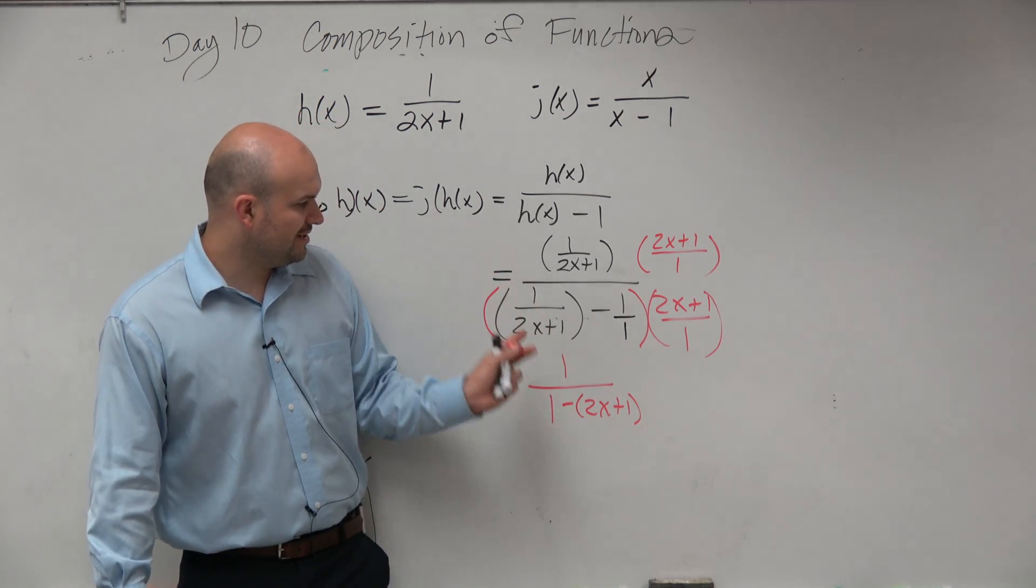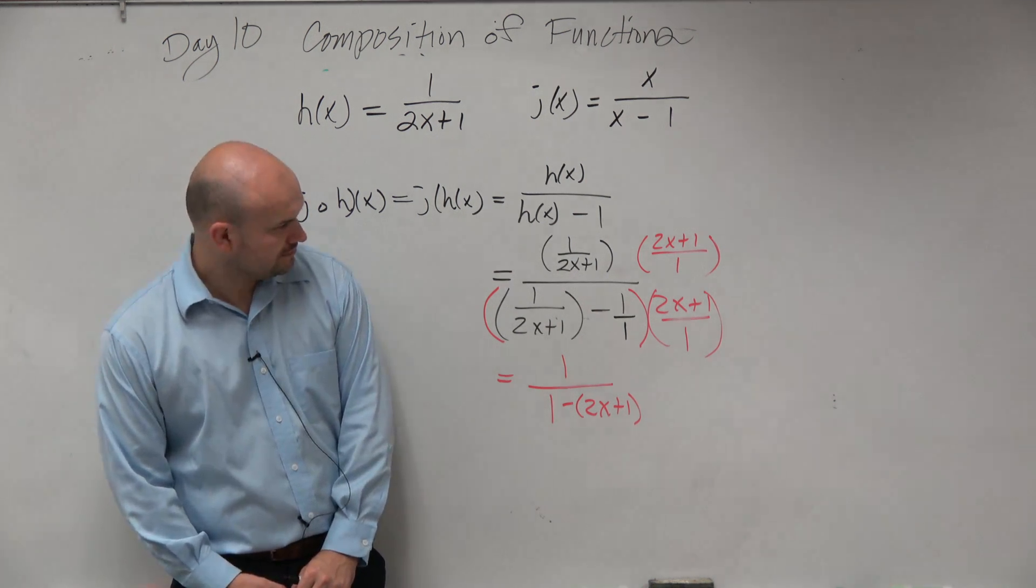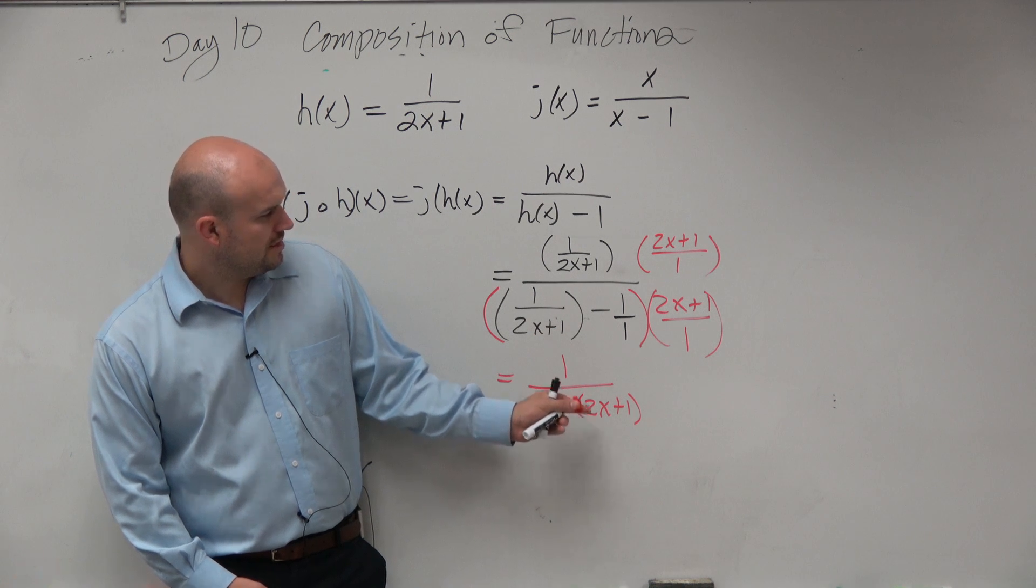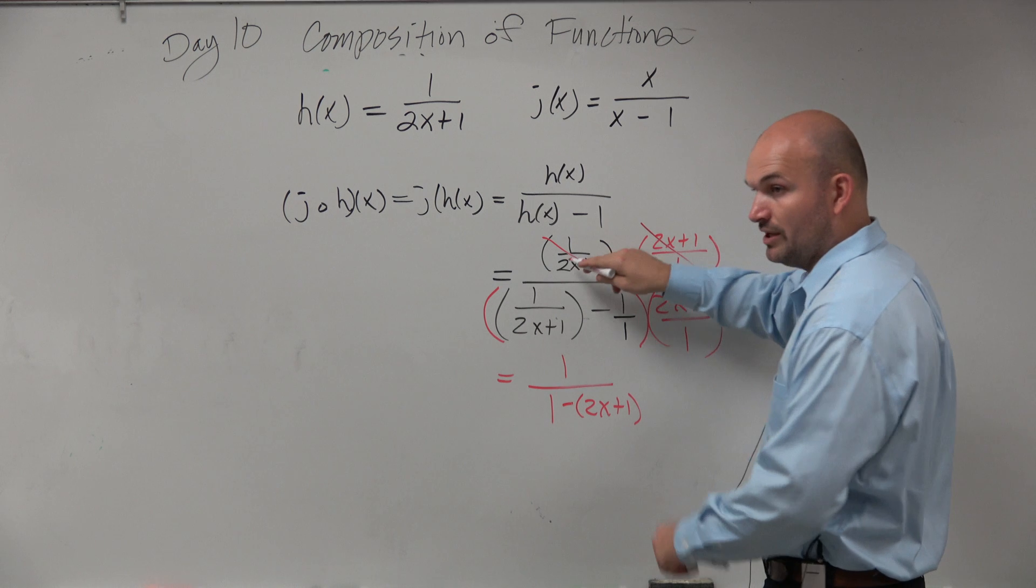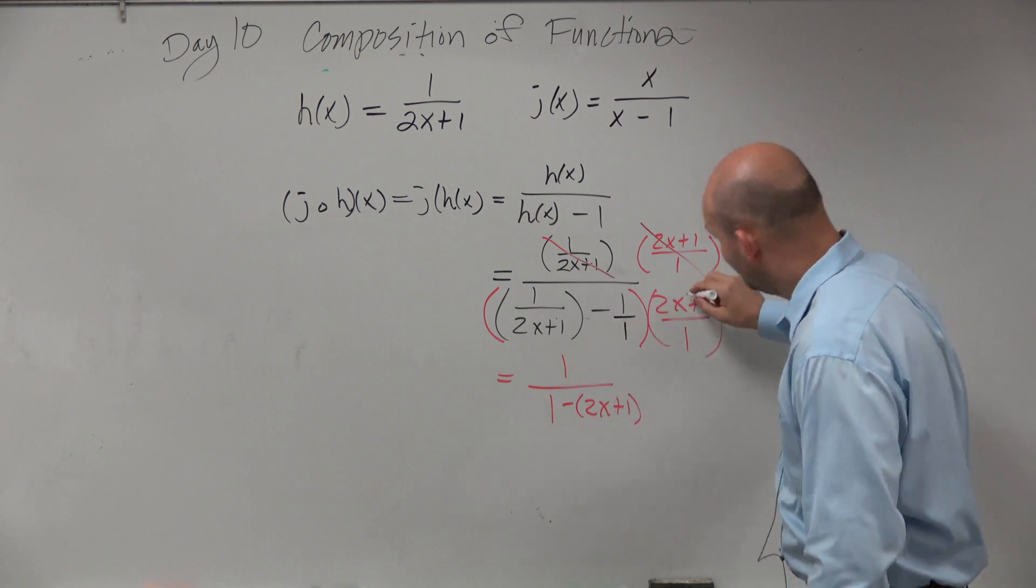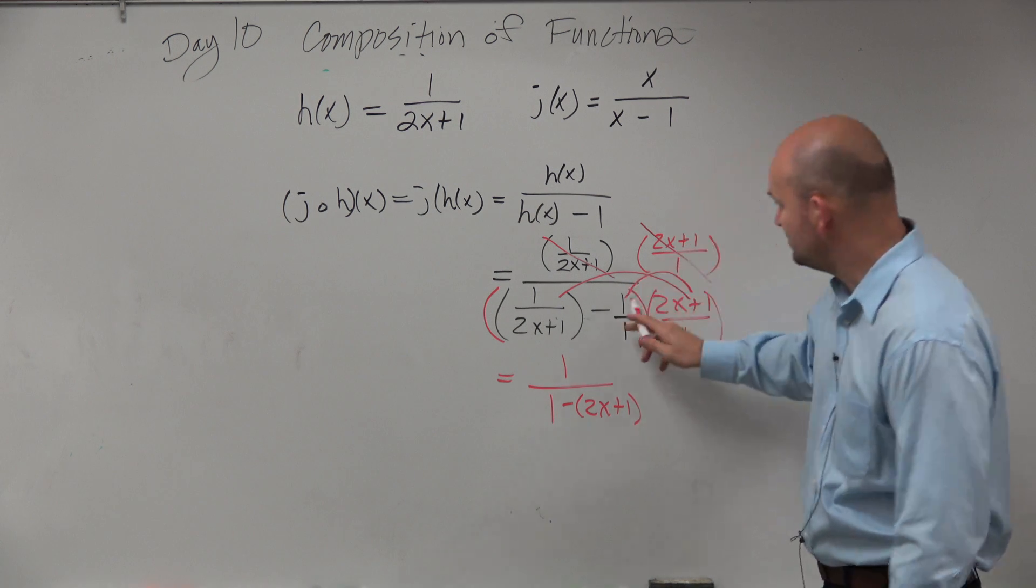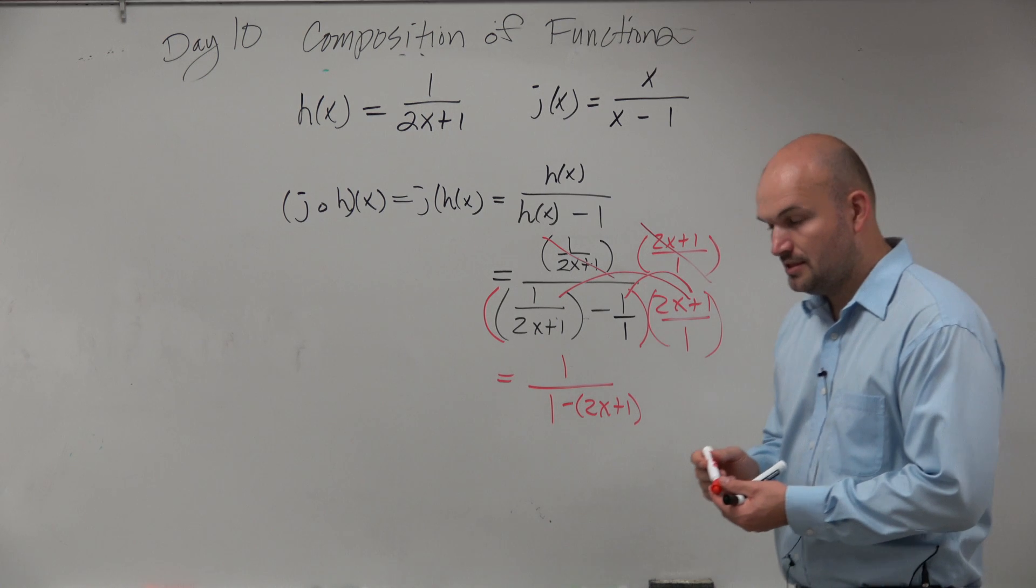Does anybody have any questions on how I got from here to here? Why is it 1 times 2? Why is it 1? Another denominator. Well, you agree with me that this times this goes to 1. That's where that 1 was. This times this goes to 1. That's where that came from. This times this, negative 1 times 2x plus over 1 gives me that.